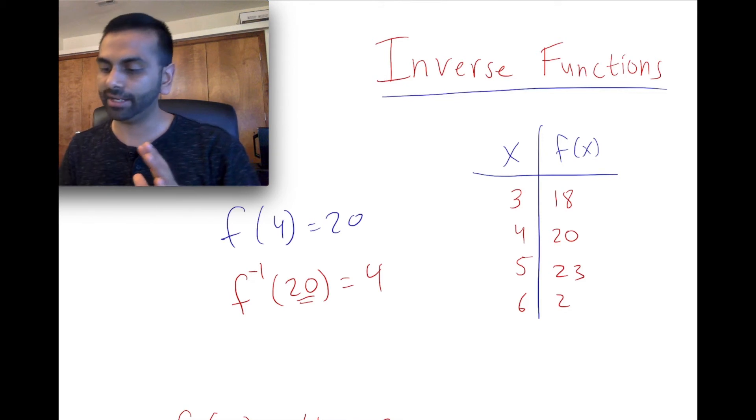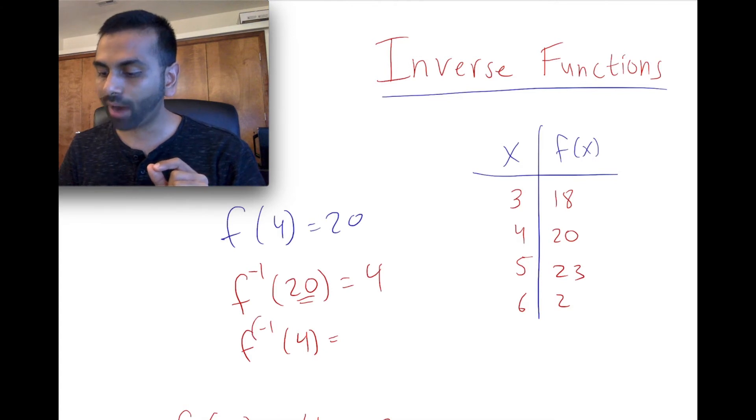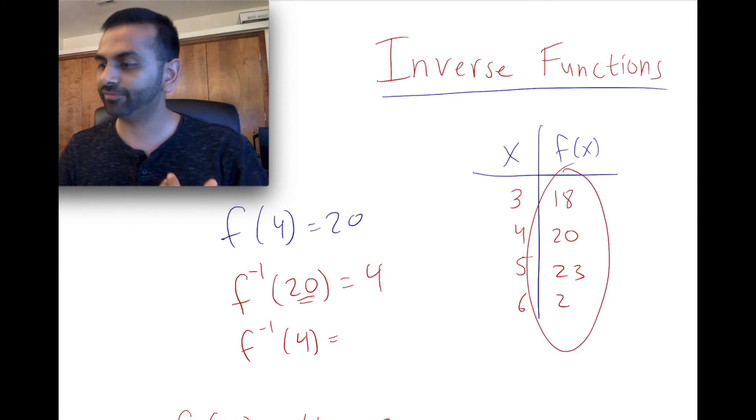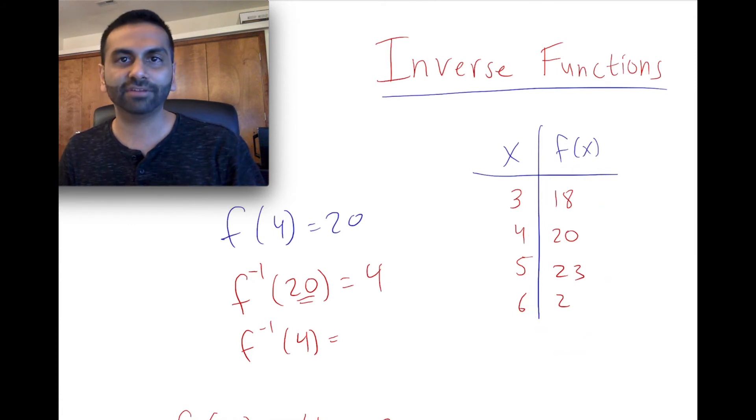So that's really all that's going on here. If I were to ask you what's f inverse of 4, it's not that, oh, f of 4 was 20, so f inverse of 4 is like the reciprocal or whatever. No. Again, the question here is, when y is 4, what's x? And on this table, we don't have that info. There is no y value of 4, so we just don't have enough info for that.